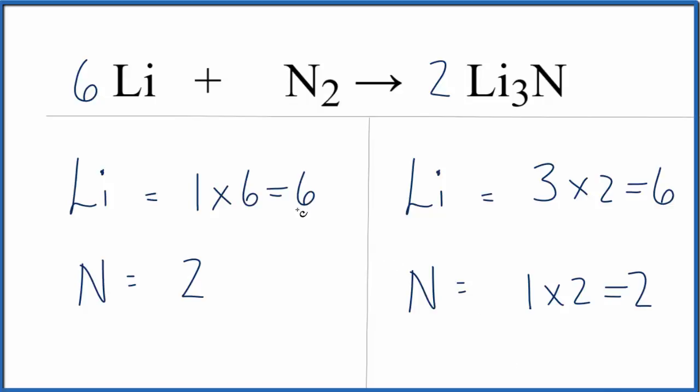So now everything on each side of the equation is the same. Six lithiums, six lithiums, two nitrogens, two nitrogens. This equation is balanced.